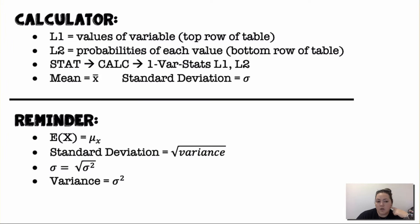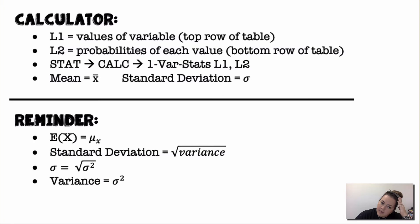To do this on a calculator, put all your outcomes in List 1 and all the probabilities in List 2. Then go to STAT, CALC, 1-Var Stats, with List 1 as your data list and List 2 as your frequency list. The mean is x-bar, the standard deviation is sigma, and the expected value equals mu-x, which is the mean.